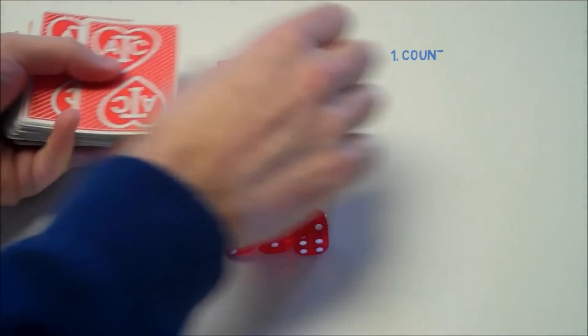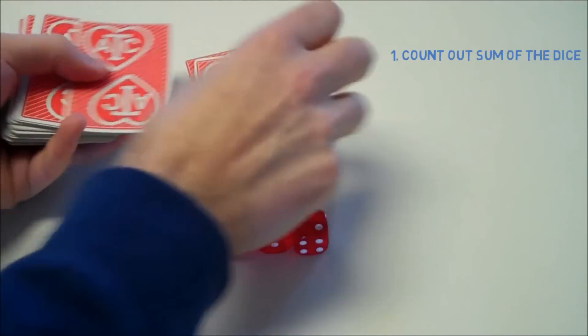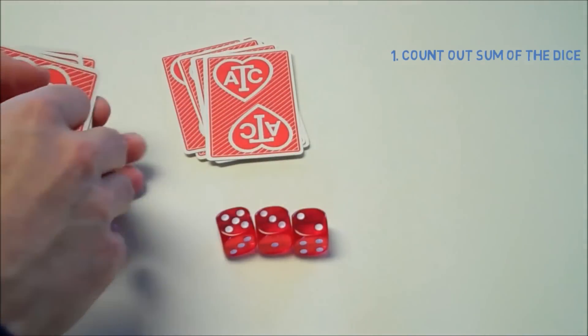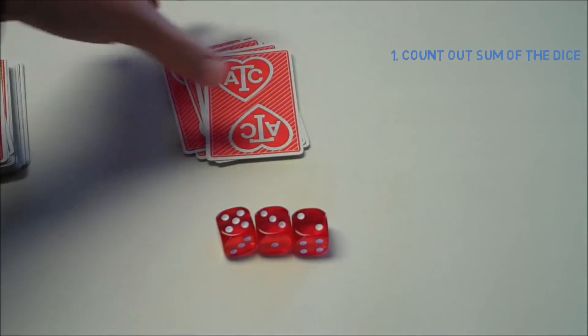The numbers five, three, and two add up to ten. And what you do is count out the number of cards equal to the sum of the numbers on the dice. So we count out ten cards.